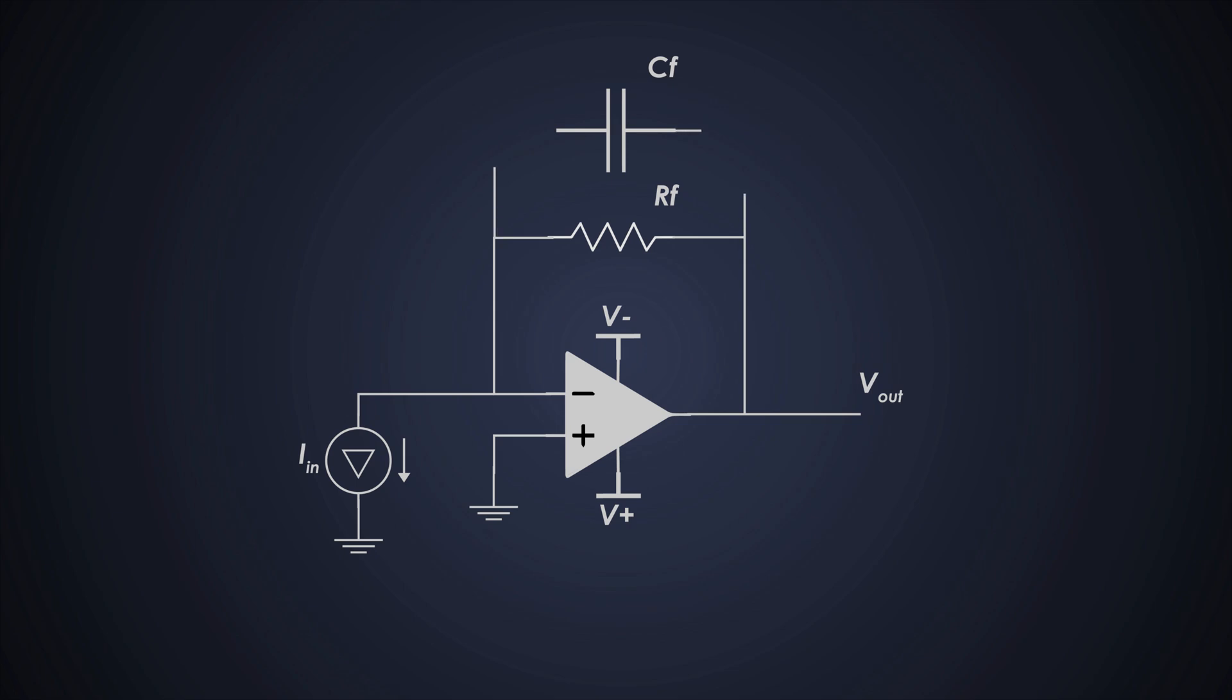Then we can place a small capacitor in parallel with the feedback resistor to stabilize the circuit. The output of the op-amp provides the converted voltage signal.